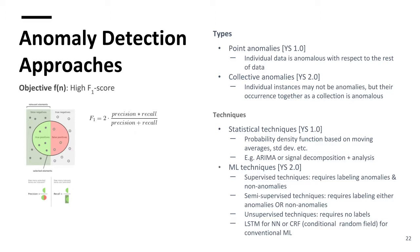Moving on to machine learning techniques — there are supervised, semi-supervised, and unsupervised techniques, depending on how good you are at labeling your data. Labeling data is a task in and of itself. We're exploring how we move to some of these techniques in the next generation of what we're building. There are neural net approaches and traditional conventional ML approaches you can use for anomaly detection.